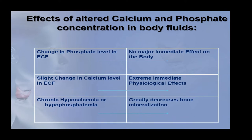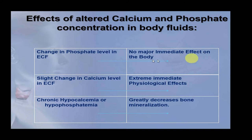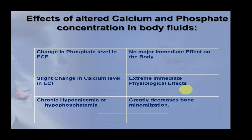If there is a change in the phosphate level in the ECF, no major immediate effect is observed—there may be slow and steady effects if the condition persists. However, a slight change in the calcium level in the ECF can lead to extreme immediate physiological effects. In cases of chronic hypocalcemia or chronic hypophosphatemia, bone mineralization is greatly decreased, weakening the bone and leading to osteoporosis and other conditions.